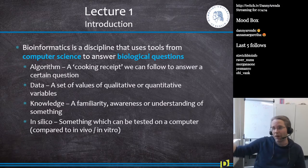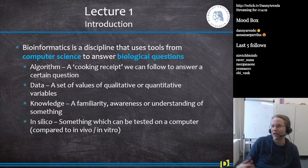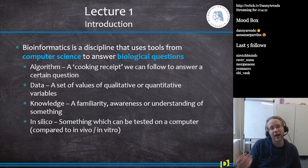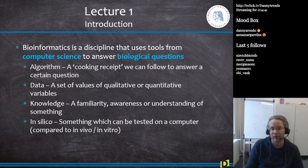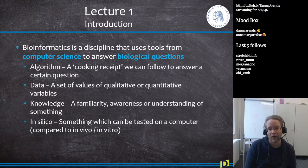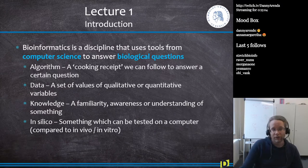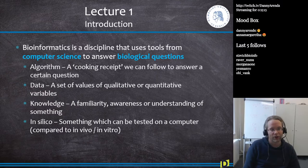In Lecture 1, the introduction, we talked about what bioinformatics is — a discipline that uses tools from computer science to answer biological questions. If I ask 'what is bioinformatics,' I want you to mention computer science and biological questions. Also know what an algorithm is, what data and knowledge are, the difference between them, and the difference between in vivo, in vitro, and in silico.